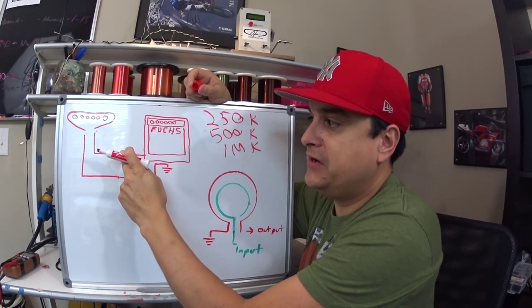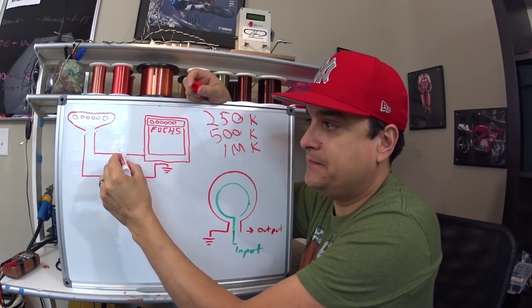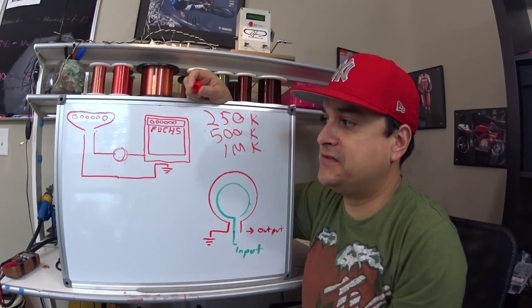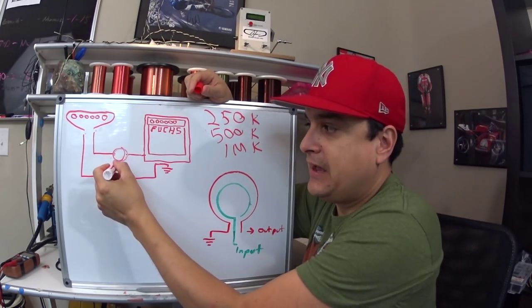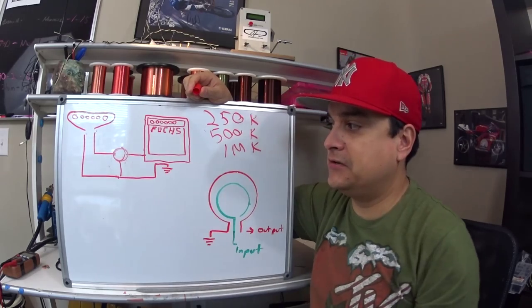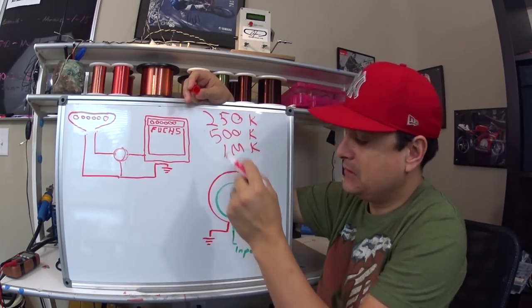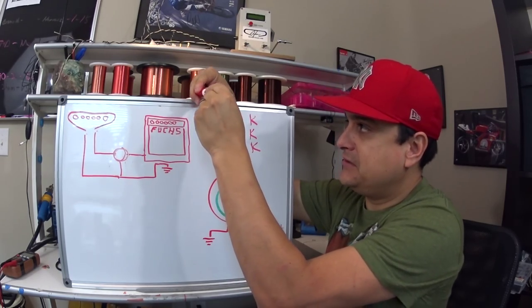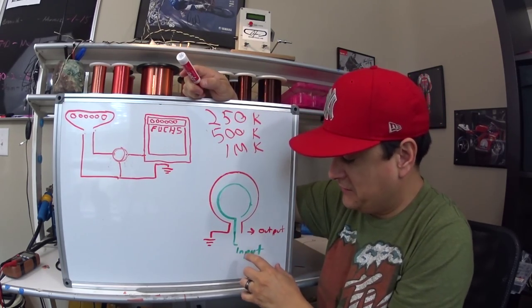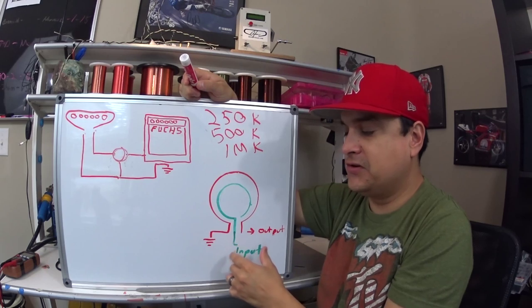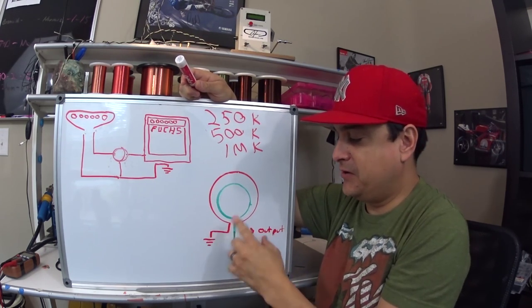Now if we go ahead and we put a volume pot in here, now we're all of a sudden able to vary how much that signal goes to ground. Here's how that works. Over here we have a diagram, or it's actually kind of a drawing really, of how your simple volume pot works in your guitar.